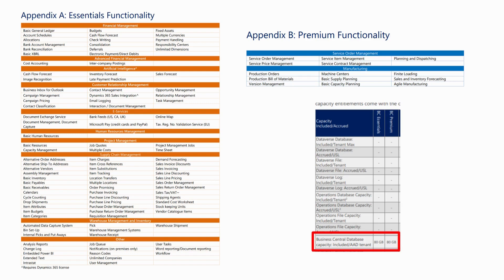Today we're going through the licensing within Business Central, and in particular discussing the price points of the different licenses, the different levels of access each one gives, and the functionality you get with different licenses. Microsoft does provide a licensing guide on its website but it's over 60 pages long and encompasses all the Dynamics products, so trying to make heads and tails of it can be quite confusing. I've tried to summarize that in this video just for the key points specifically around Business Central.